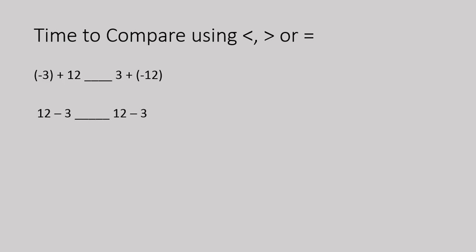Let's go ahead and do that. We look at these two questions. On the left side, negative three plus 12 — the signs are different, so we're going to find the difference. On the right side, the signs are also different, so we're going to find the difference. In both cases we get nine. We have to find the correct sign: on the left, there are 12 positives and only three negatives, so our answer is positive nine.